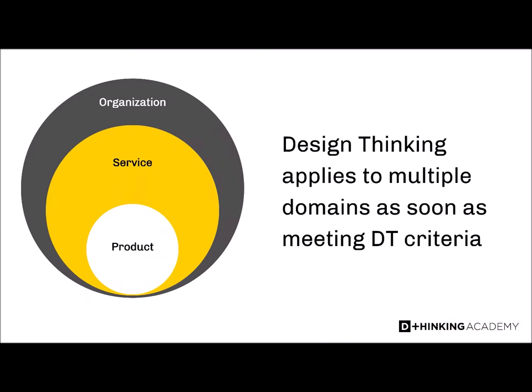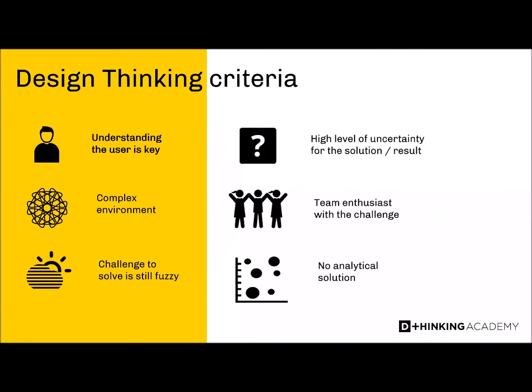Design thinking applies to multiple domains as soon as it meets certain criteria. You can use it to design products, services, and more recently organizations — all to make them more user-centered. When can you decide to use this mindset and method? We have six criteria. The most important one is when the challenge requires deeply understanding the user.